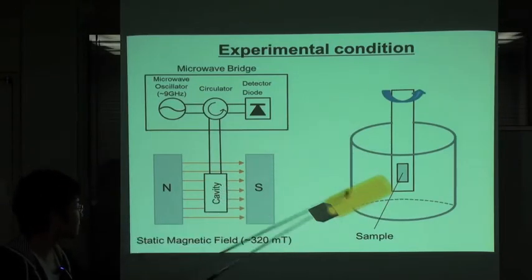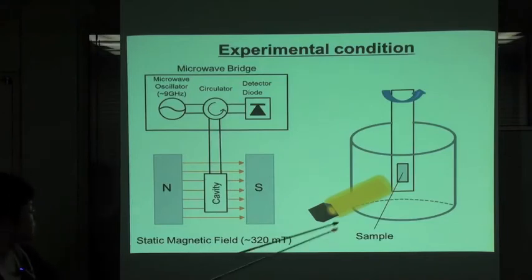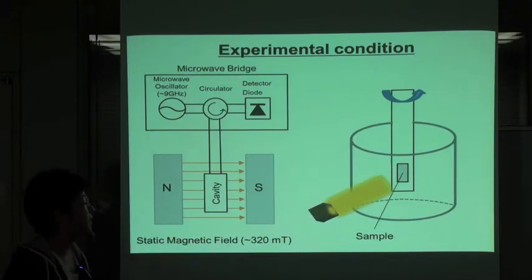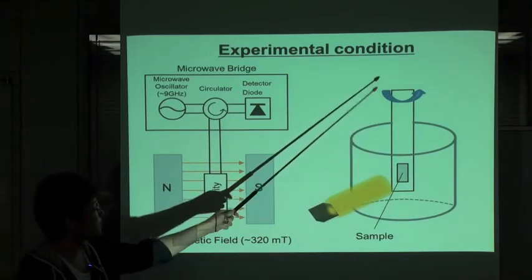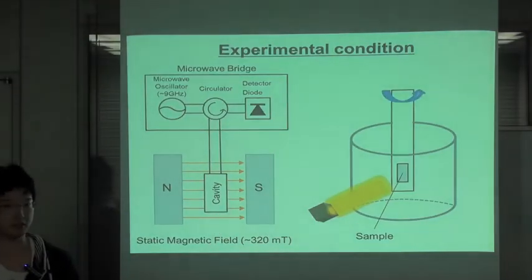The right figure is the outline of the cavity. The sample is set in this sample holder. And we can rotate this sample holder to check the angular dependence of the signal.